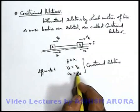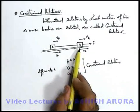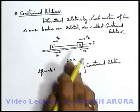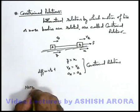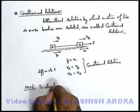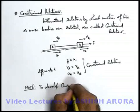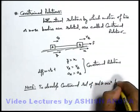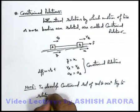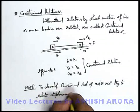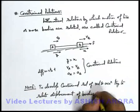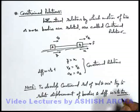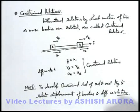So basically, keep one thing in mind: if you want to develop constrained relations for velocity and acceleration for any given bodies, first you need to relate their displacements and then differentiate with respect to time. To develop constrained relations of velocity and acceleration, try to relate the displacement of bodies and differentiate with respect to time — this will give you the constrained relations of velocities and acceleration. Now we'll see some examples based on this logic.